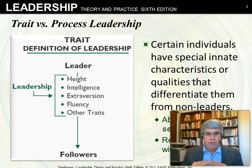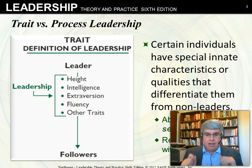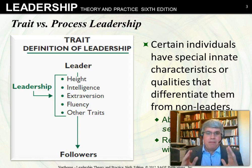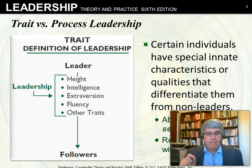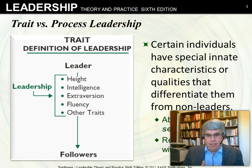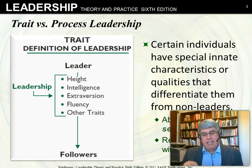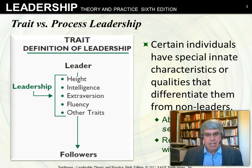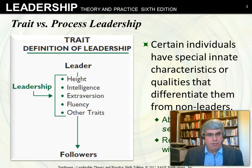For example, we know that if a person is taller than average, more intelligent than average, more extroverted than average, and very fluent — among a few other traits — that person is more likely to influence others. In the trait approach, you look at the abilities of the leader, with the idea that those abilities reside in select people. This pretty much restricts leadership to those with an inborn talent — a traditional, naive, common-sense approach.